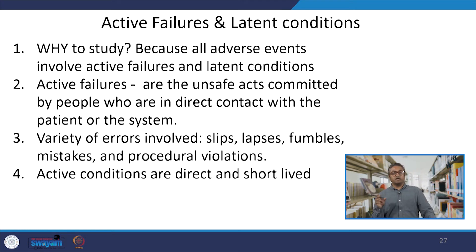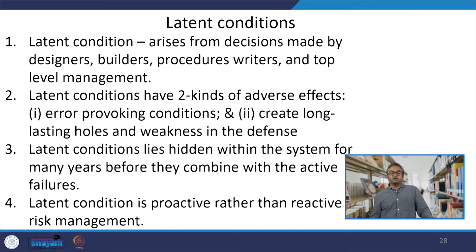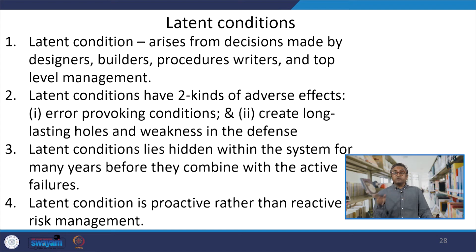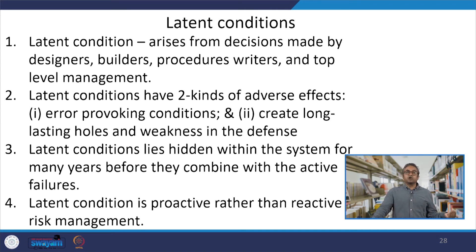Active conditions can be direct and short-lived. Latent conditions are hidden in nature. They arise from decisions made by designers, builders, procedure writers, and top-level management. In the Chernobyl incident, people were lacking knowledge about the fact that when the fuel rod comes down it may result in a high exothermic reaction — that information came from decisions made by top-level management who tried to keep it secret. In the Columbia shuttle experiment, foam came out and nobody observed or noticed it, but when it entered the Earth's atmosphere, it resulted in a big human disaster.